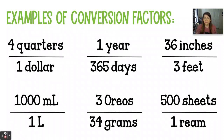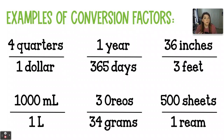Here are some examples of other conversion factors: four quarters and a dollar; one year is equal to 365 days; 36 inches is equal to three feet. From the metric system lesson, you know that there's a thousand milliliters per liter. And then this one was kind of fun — in order to have three Oreos, you would have 34 grams of Oreos. Those are equivalent values. And then 500 sheets of paper makes a ream.